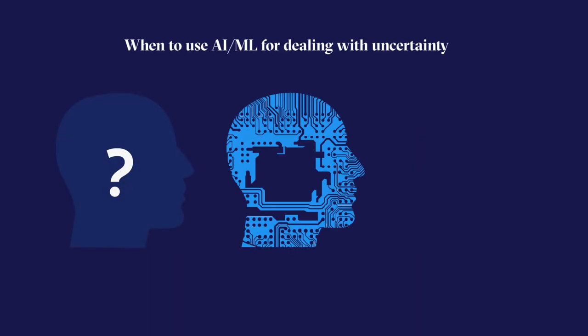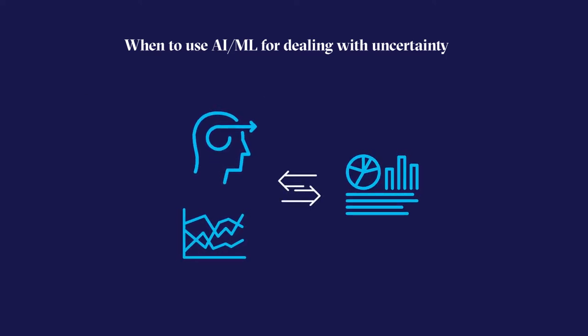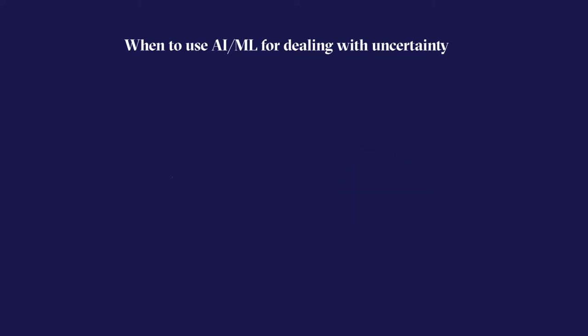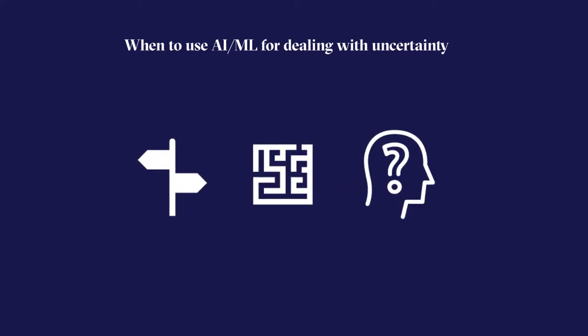We use artificial intelligence and machine learning to optimize decisions that are based on imperfect data. By doing so, we ensure the best results from uncertain outcomes. Our business results are essentially based on forecasts and predictions. Hence, we consider uncertainty to be the constant factor in all our estimates and calculations.